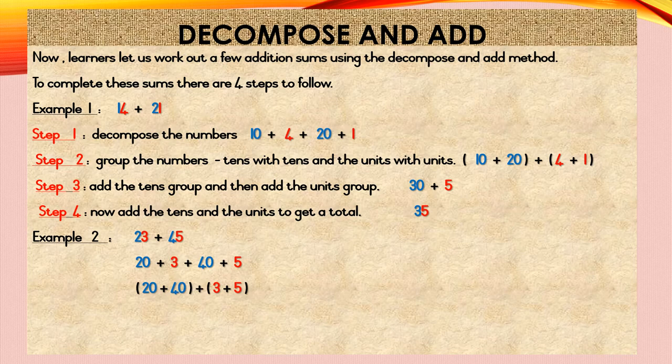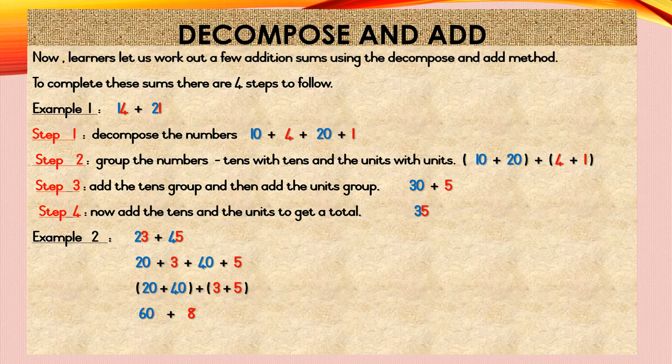Step 2: Group the numbers — that is the tens with the tens and the units with the units. So in your tens bracket you will have 20 plus 40, and in your unit bracket you will have 3 plus 5. So step 2 will read (20 plus 40) plus (3 plus 5). Step 3: Add the tens group and then add the units group. Your tens group is 20 plus 40, so 20 plus 40 is equal to 60. Your units group is 3 plus 5, so 3 plus 5 is equal to 8. So step 3 will read 60 plus 8.